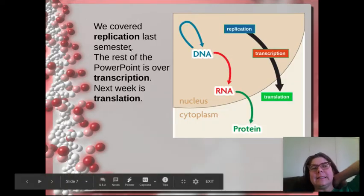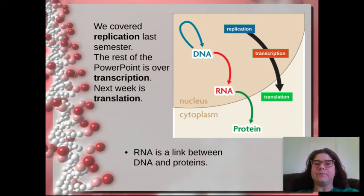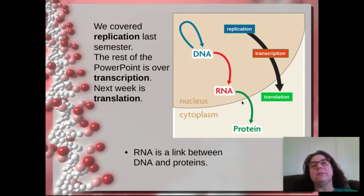Now, we covered replication. It says last semester was actually at the beginning of this semester. So ignore that part of it. The rest of this PowerPoint is going to be over transcription. And we're actually going to do next week's translation right after this. But here is a nice little diagram that shows sort of the overall process where we have the DNA inside the nucleus. And the DNA can be transcribed into RNA, which can actually leave the nucleus and form the protein. RNA is the link between DNA and proteins. So in order for that DNA to code for the protein, it needs an intermediate molecule. And that's where RNA comes into play.